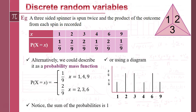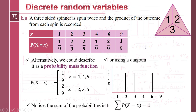One last thing to notice: if you go back to the table, because you've got all the possible outcomes — 1, 2, 3, 4, 6, 9 — it can't be anything else. So if we add up the probabilities — 1/9 plus 2/9 plus 2/9 plus 1/9 plus 2/9 plus 1/9 — those things sum to 1. The sum of the probabilities for each x is 1.